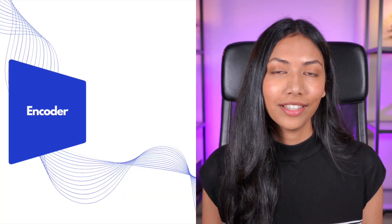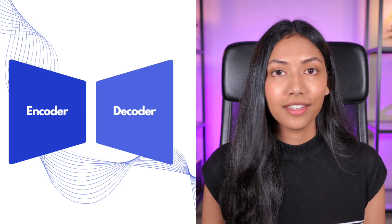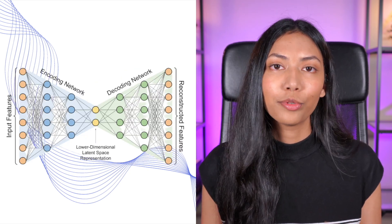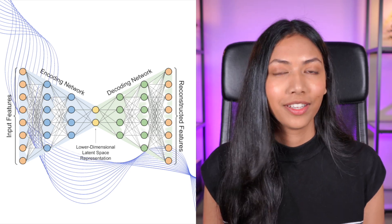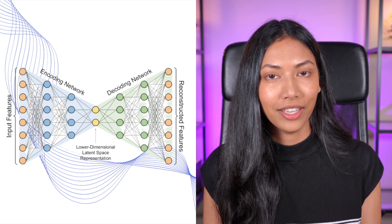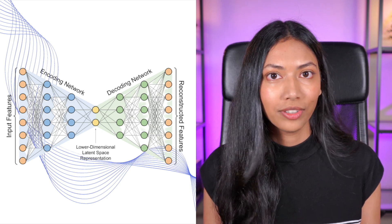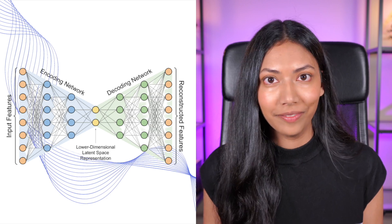Auto-encoders consist of two parts: an encoder and a decoder. An encoder takes in input data, for example images, and compresses it into a smaller representation. A decoder then takes this smaller representation and tries to recreate the original image as closely as it possibly can.